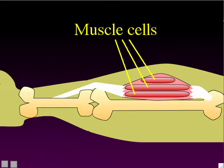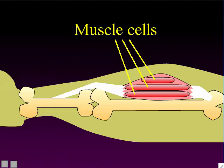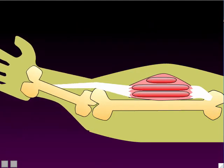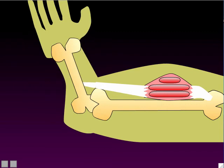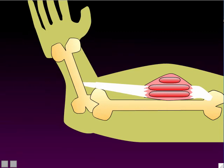Muscle tissue gets shorter because the individual muscle cells get shorter. So how is it that muscle cells make themselves shorter? The muscle cells that make up that muscle tissue got shorter — that's what made the muscle organ get shorter, and that's what allowed the body part to be moved.